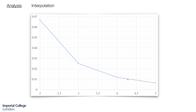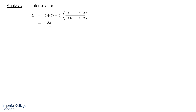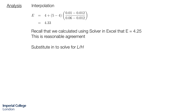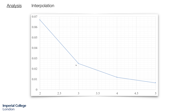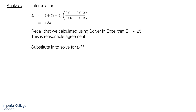Or we can calculate the crossover point mathematically using straight-line interpolation, and we end up with a value of 4.33. This is different to the value of 4.25 calculated using the Solver in Excel. The reason is that this is not a straight line — it's a curve — and we've assumed a straight line between E equals 4 and E equals 5. In fact, the curve bends downward somewhat, placing the intercept at loss equals 0.01 slightly to the left of where interpolation suggests — which is exactly what we got using Excel. Either way, these numbers are close enough that either would be acceptable.